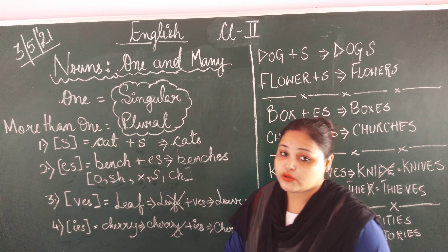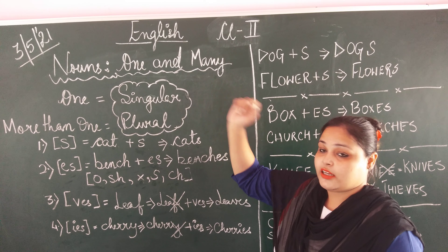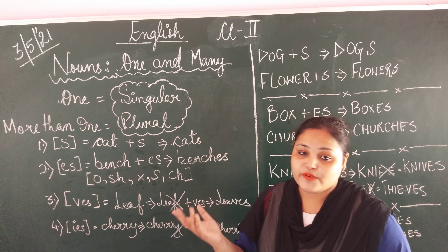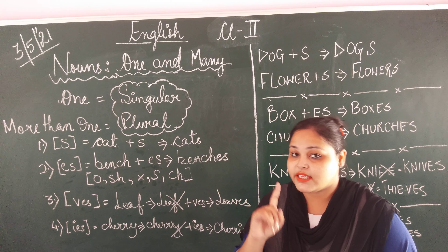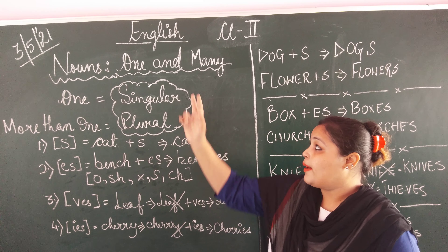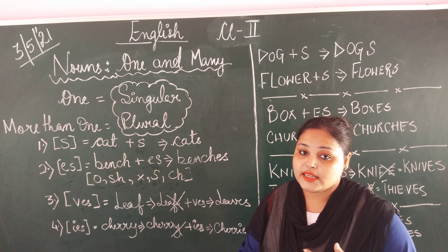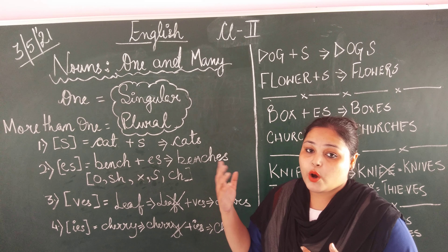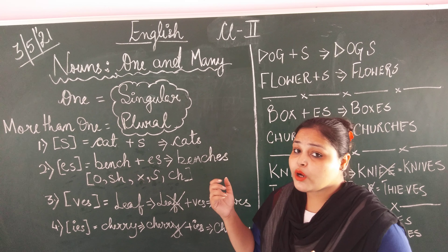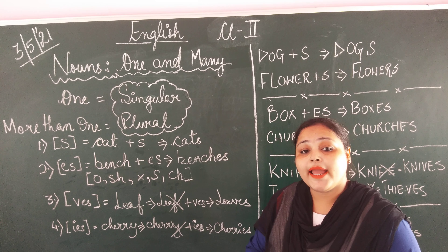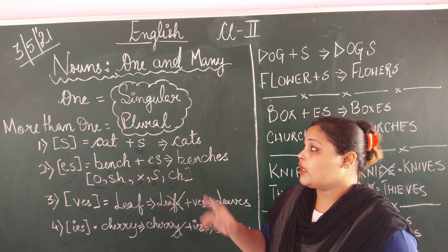First we are going to know the meanings of one and many. One means only one thing, a single thing. Many — when there are more than one things, we call them many. M-A-N-Y. Many.